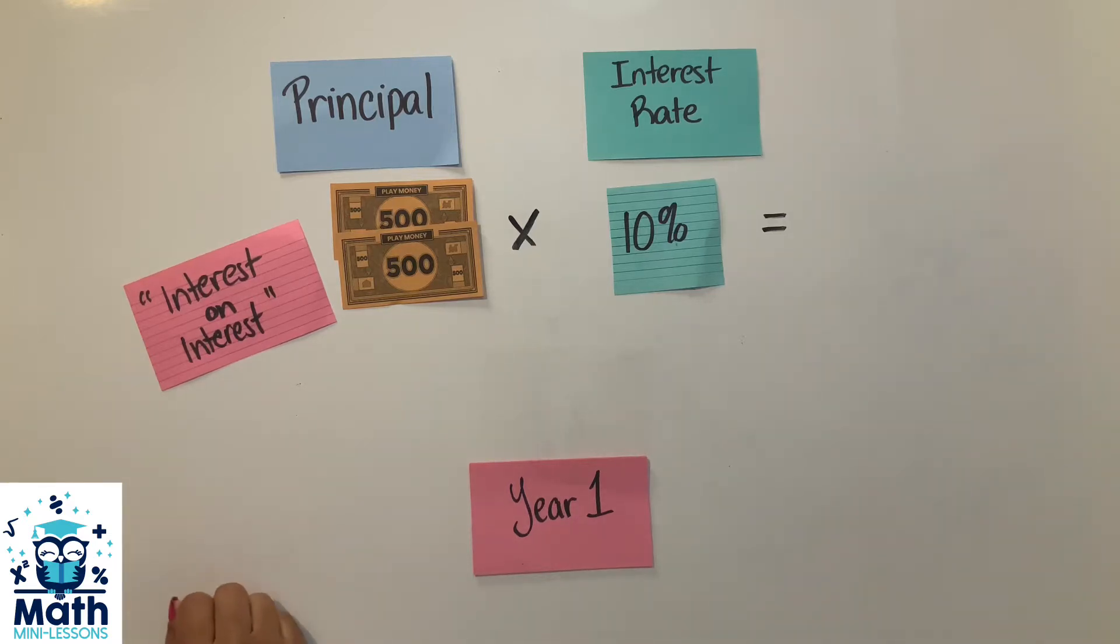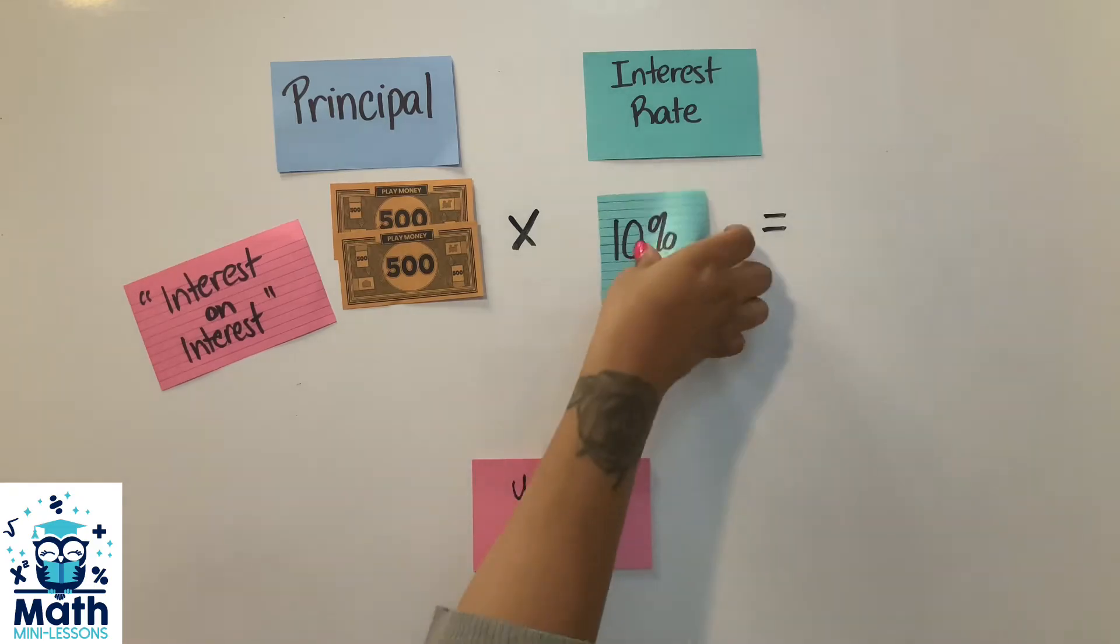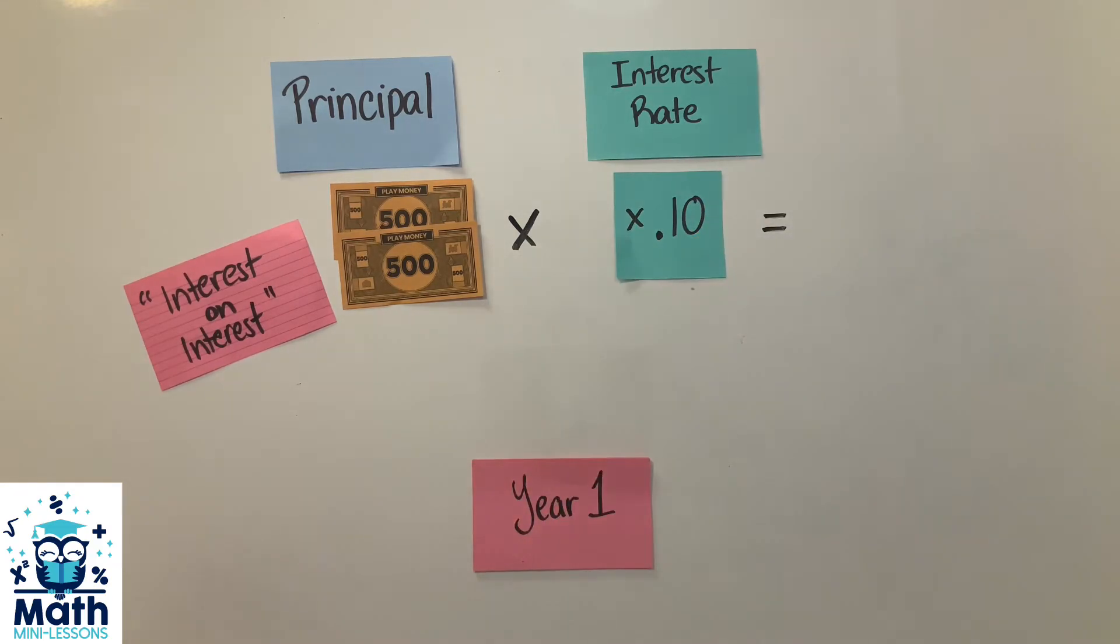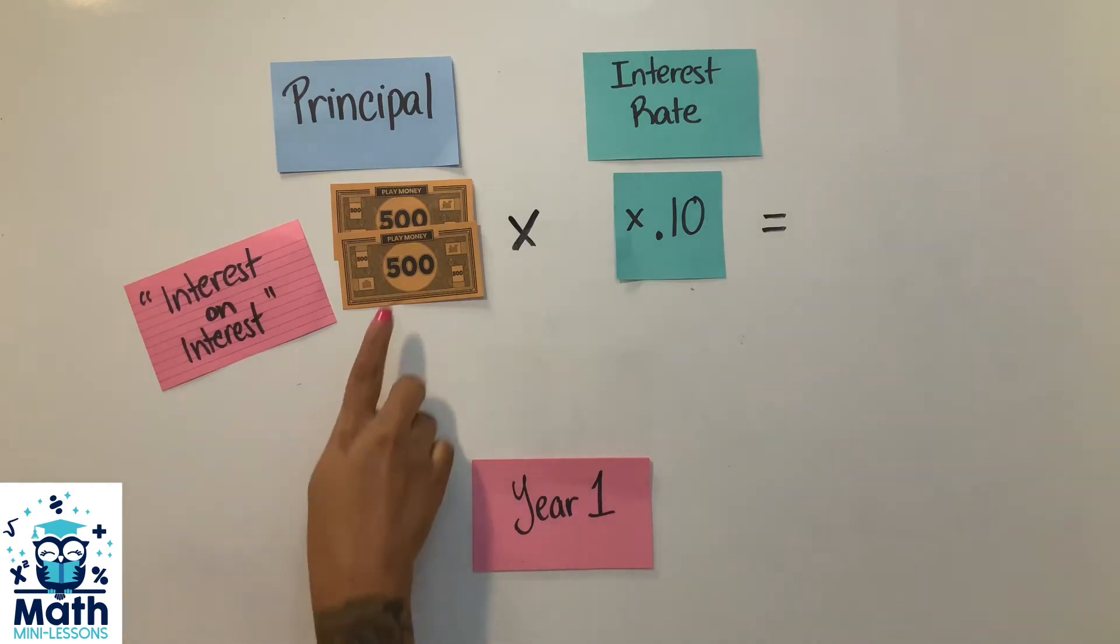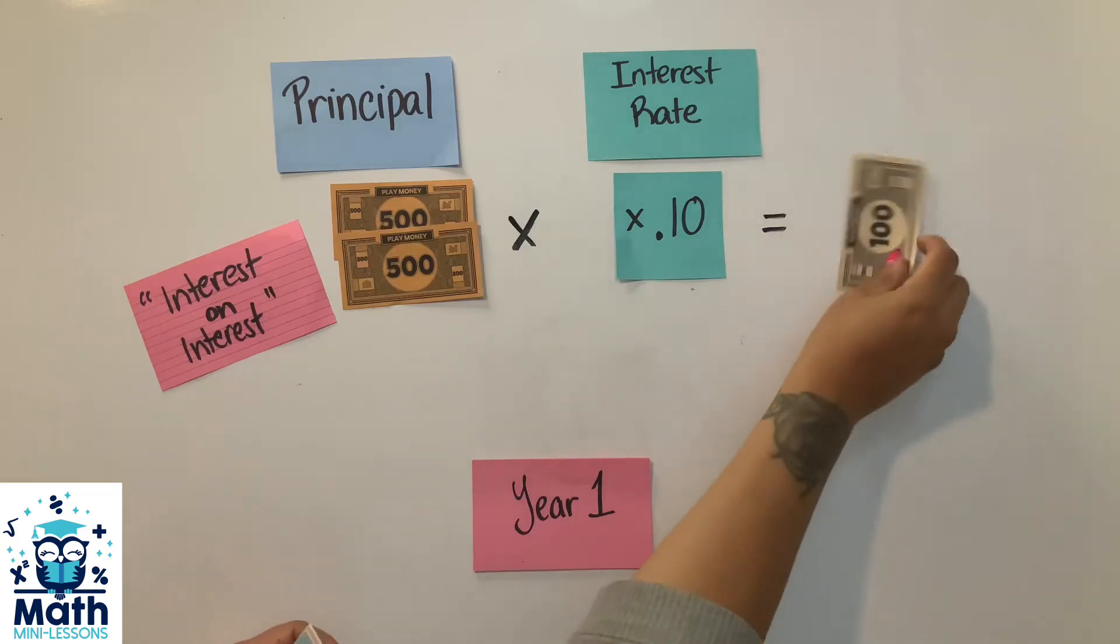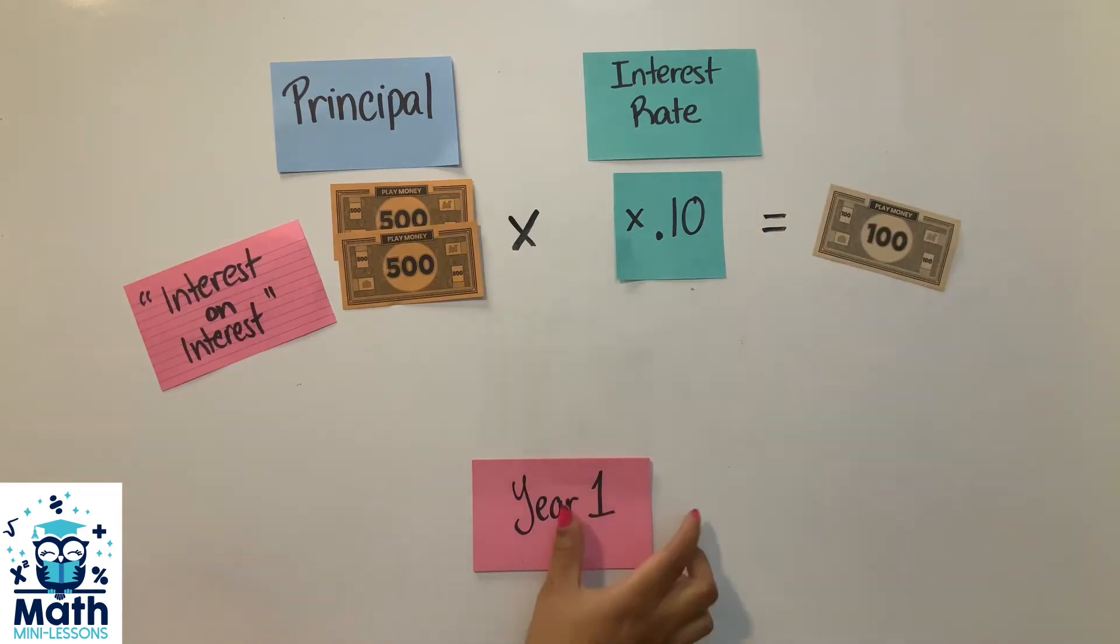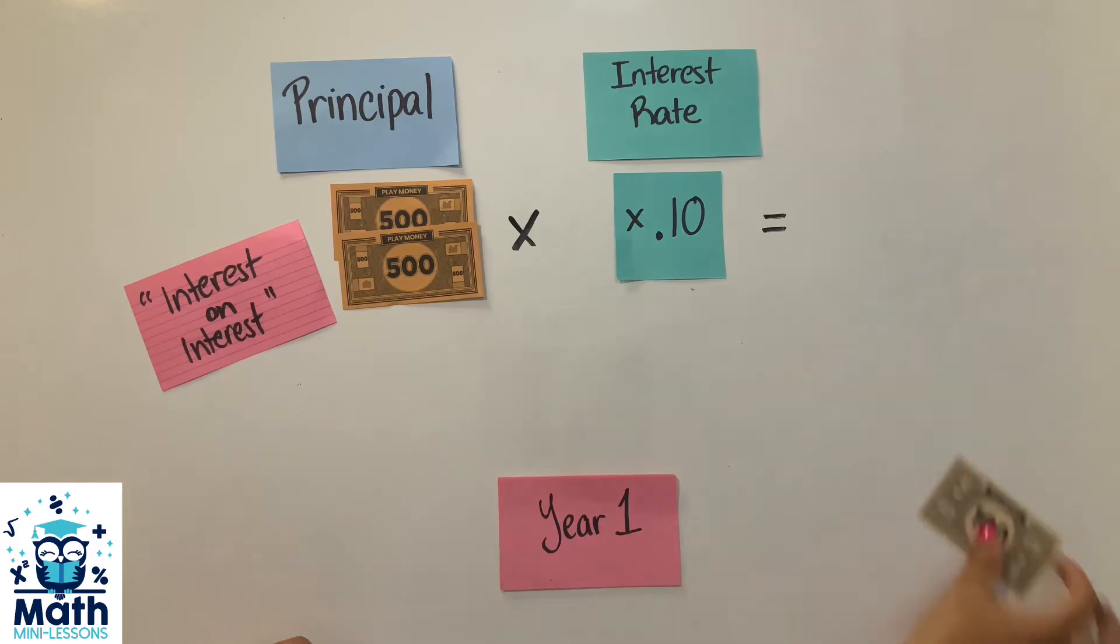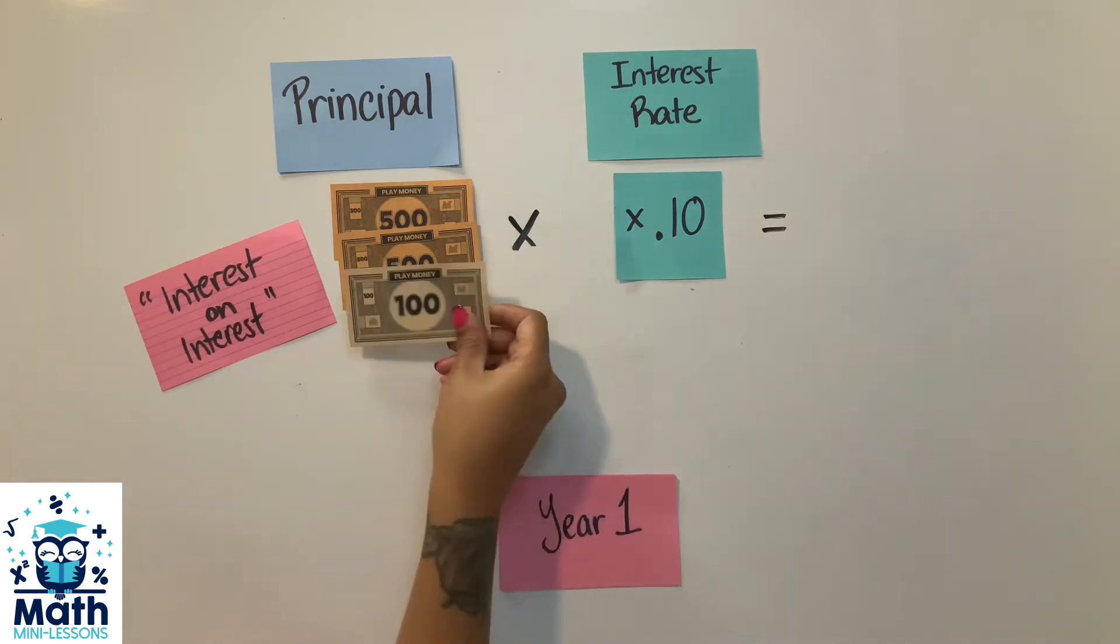Same situation: $1,000, 10%. So we're still going to multiply by 0.10, but in this case I don't have any interest, so I'm just going to multiply it by a thousand and I still get $100 in interest. But this is where it gets interesting, math marvel. I'm going to take this $100 and now pile it in here.